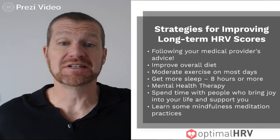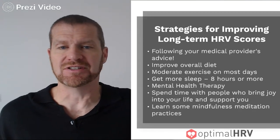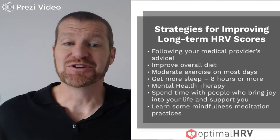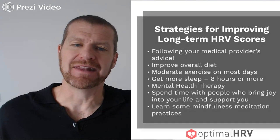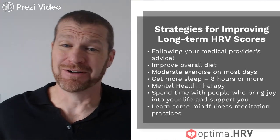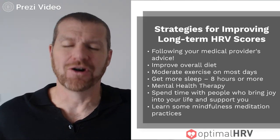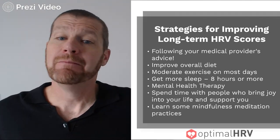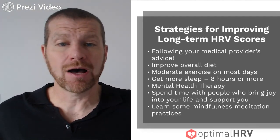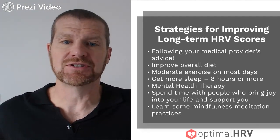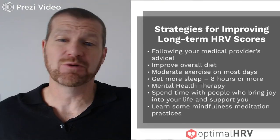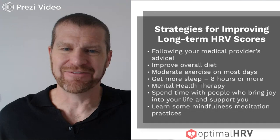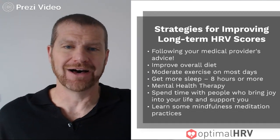Moderate exercise on most days is important. If you have really good HRV scores, maybe go for a longer run — it shows your body can take a little more strain and stress. Get good sleep; most of us need eight hours or more. One thing I've learned from using an HRV monitor is that many nights I need even more than eight hours, so try to get as much good sleep as possible. Mental health therapy is also valuable — healing past trauma and getting coping skills to deal with stress can have a big impact. Spend time with people who bring joy and love into your life, as social engagement is a great way to improve overall health and heart rate variability.